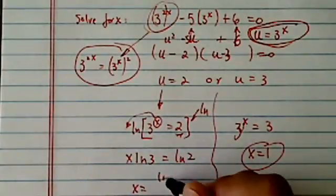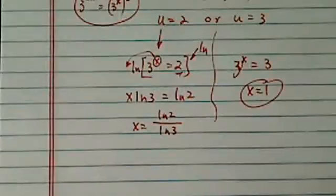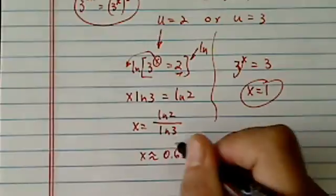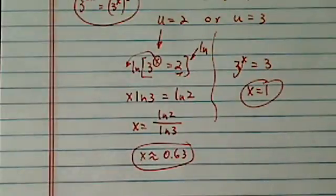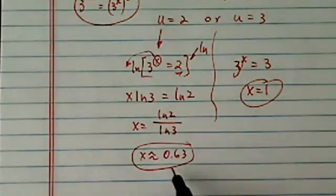Then x equals natural log of 2 divided by natural log of 3. It's not a pretty number, but if you use a calculator, it's roughly 0.63. So our two answers are x equals 1 and x approximately equals 0.63.